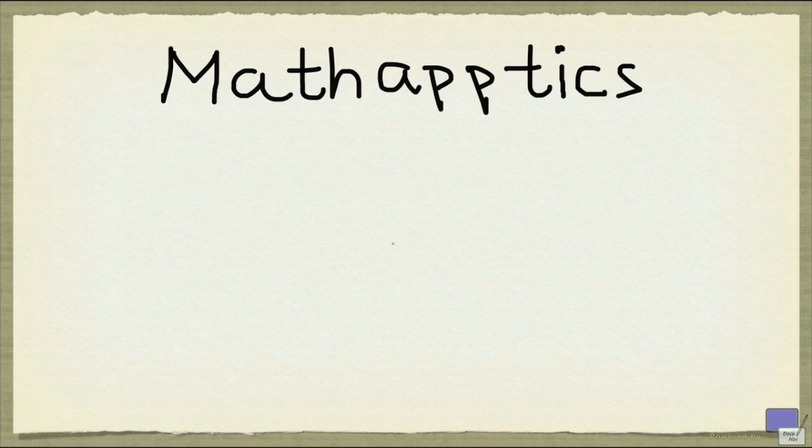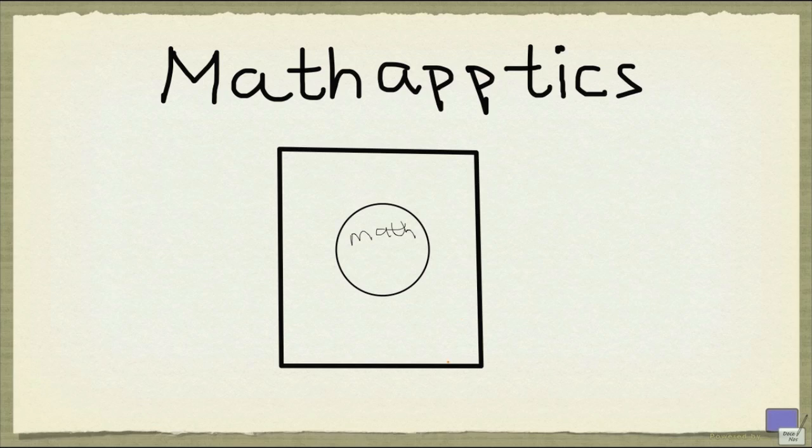So I can represent that relationship using a picture that looks like this. So say math is in here, whereas app is out here. So say that's my app.